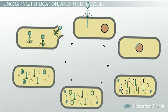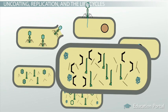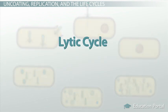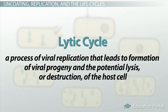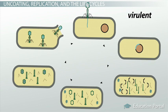Regardless, eventually something may actually trigger the latent prophage to begin producing viral progeny. This means the prophage will actually detach its genome from the host genome and begin to replicate as previously described. This is called the lytic cycle and is a process of viral replication that leads to formation of viral progeny and the potential lysis or destruction of the host cell. Viruses that are in the lytic cycle are termed virulent, as opposed to temperate. Animal viruses undergo the lytic cycle as well.